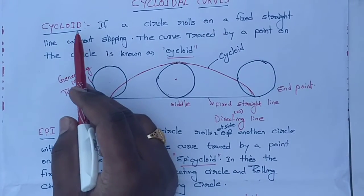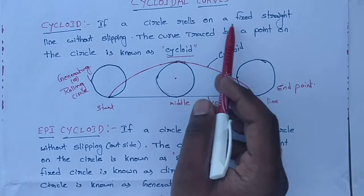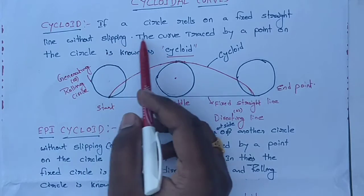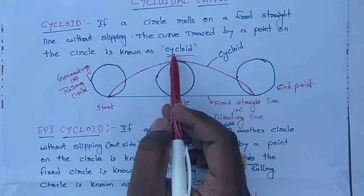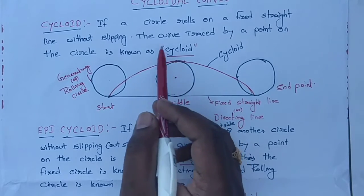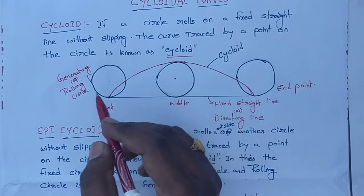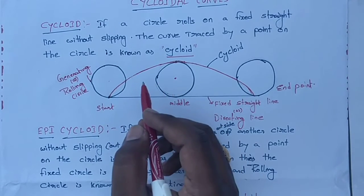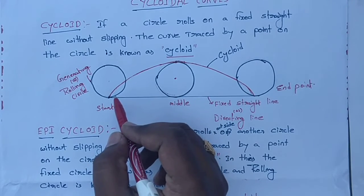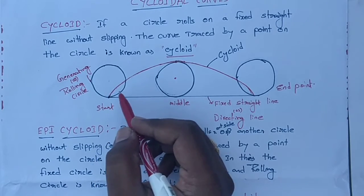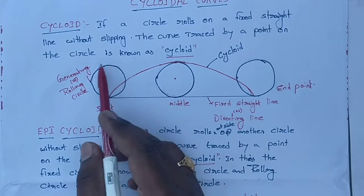First we'll discuss about what is a cycloid. If a circle rolls on a fixed straight line without slipping, the curve traced by a point on the circle is known as a cycloid. Suppose a circle or any circular object rolls on a straight or flat surface, the curve traced by a point on this circle — that curve is known as a cycloid.